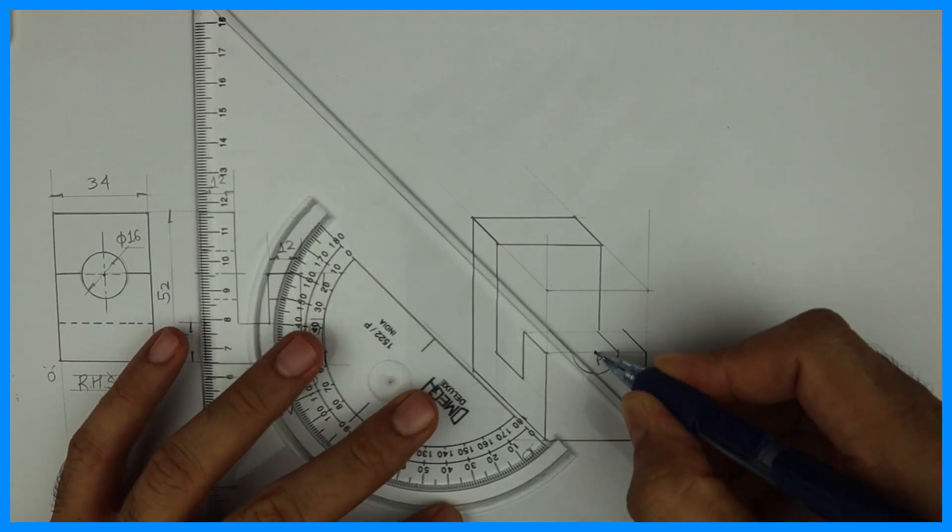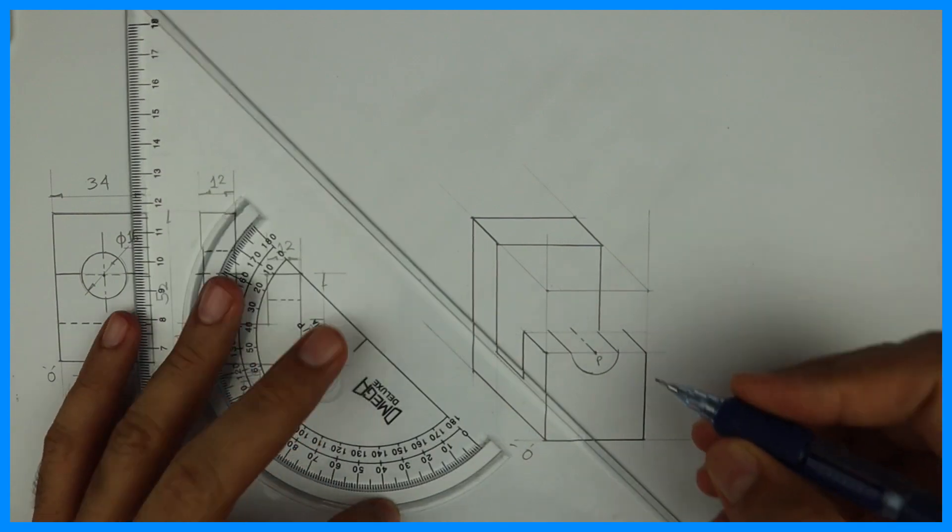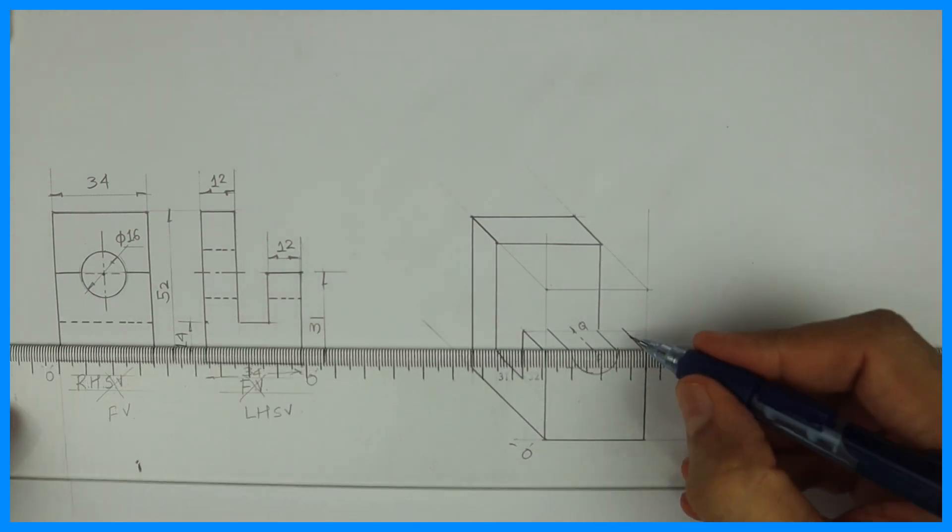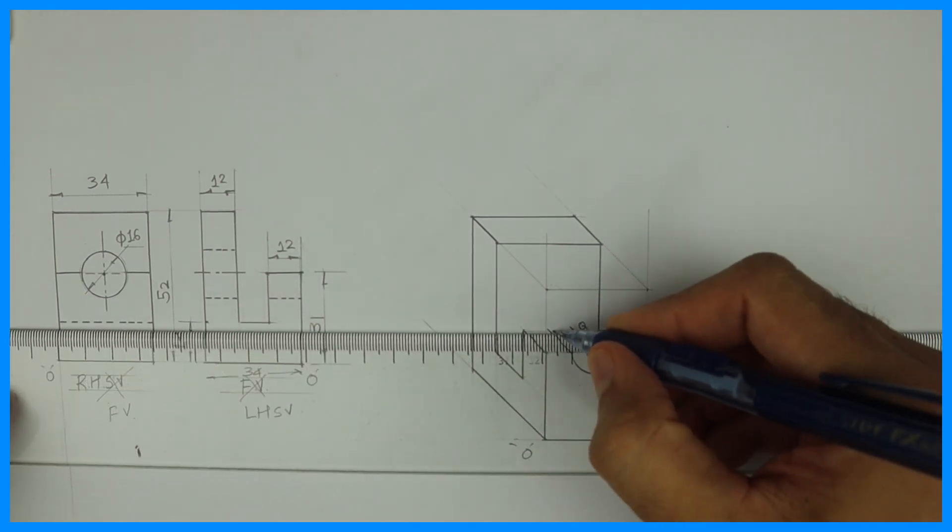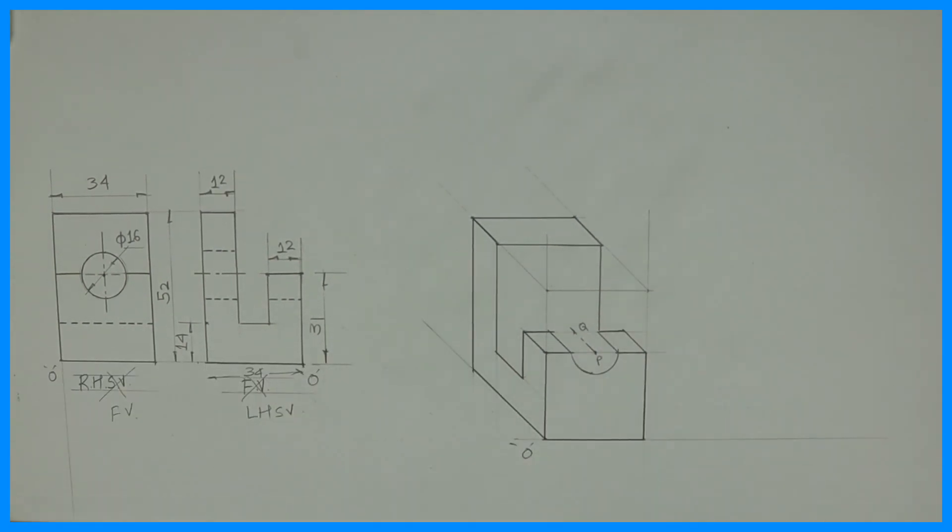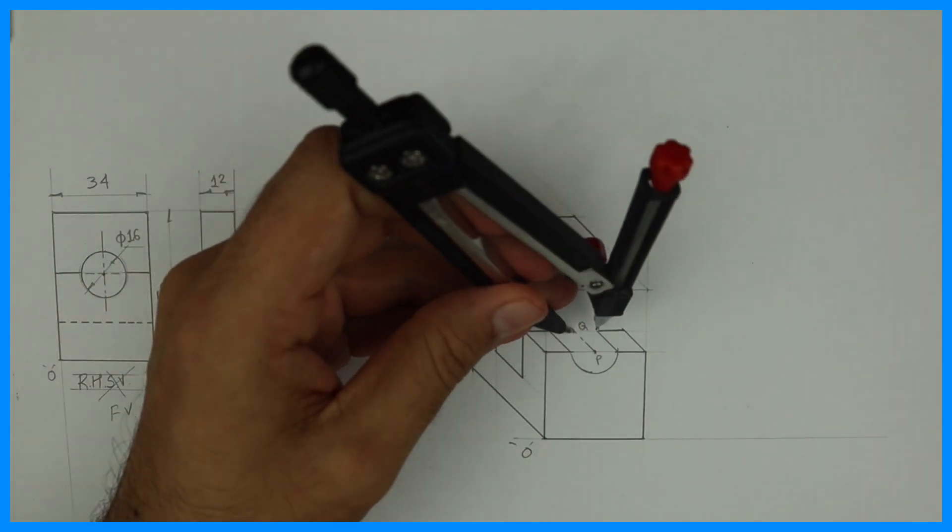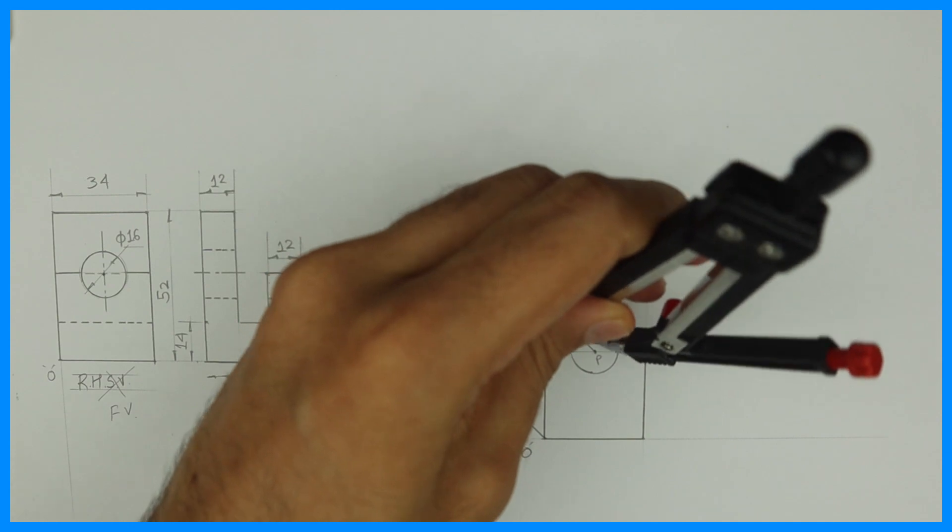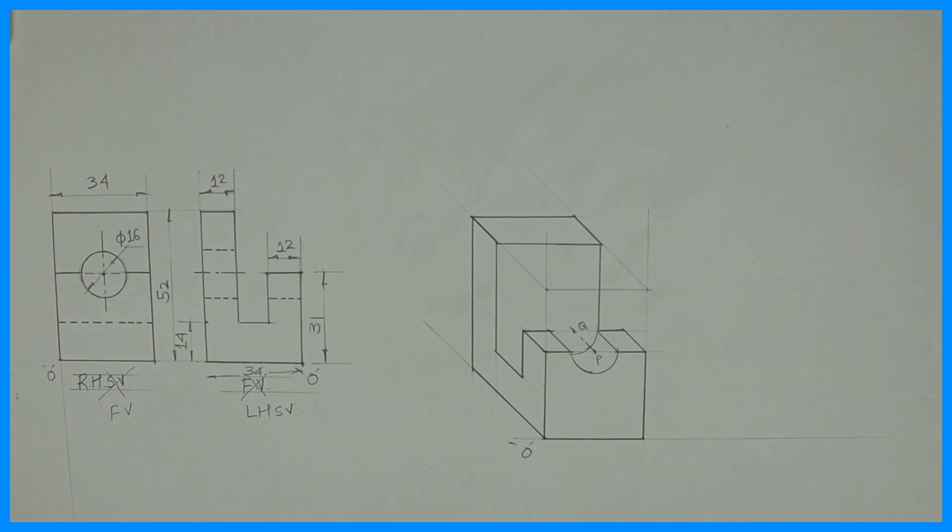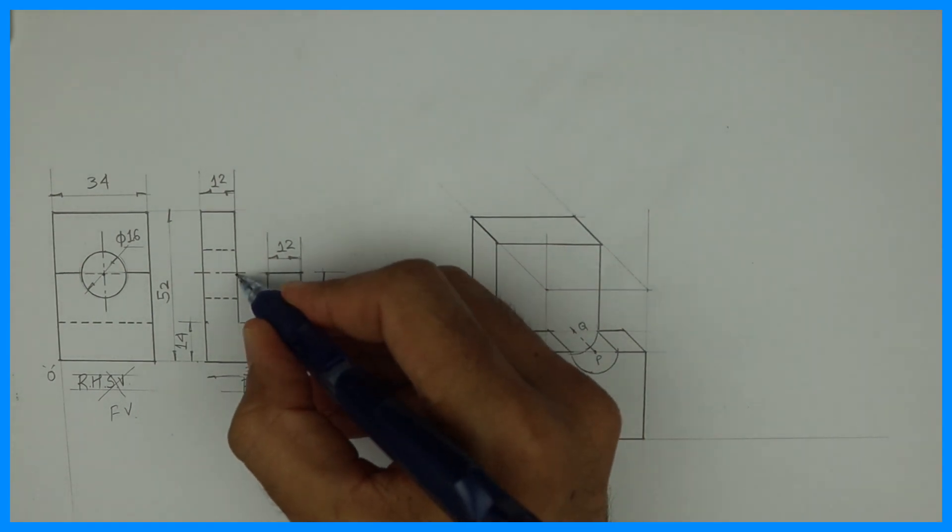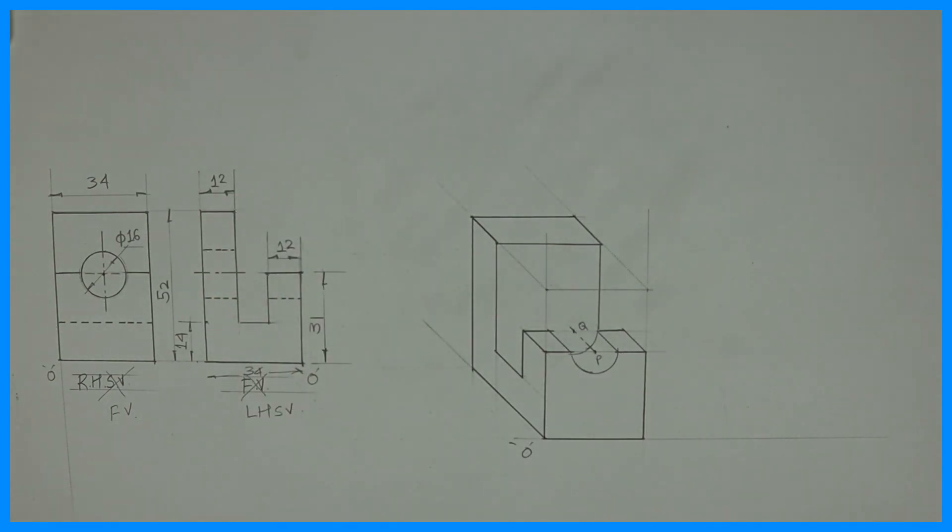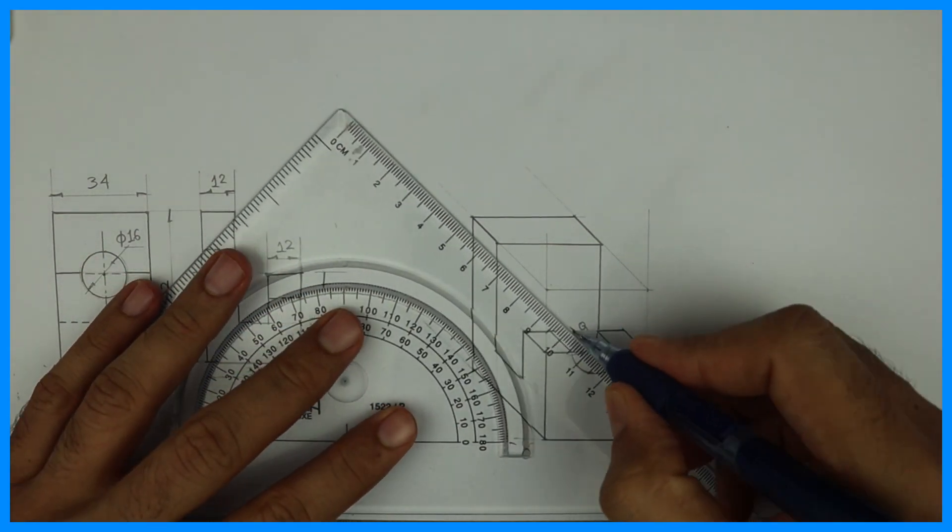You can take center point also. So this is let's say B. This is Q. Here we go. Now if you see, this will be 34 minus 12. So 10.